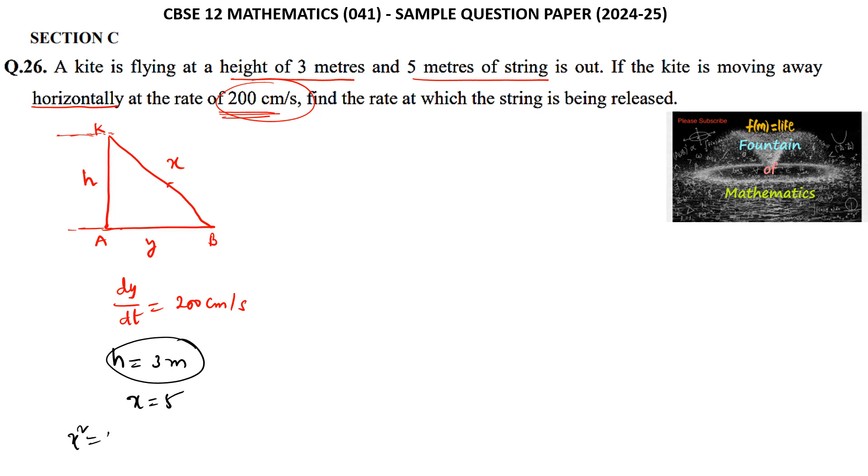We have X² = Y² + H². So Y² = X² - H² = 5² - 3² = 25 - 9 = 16, therefore Y = 4.